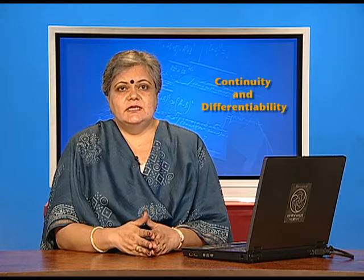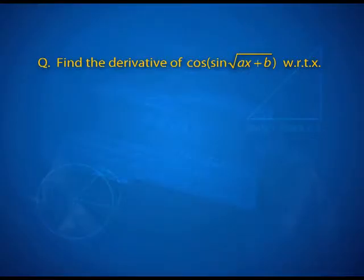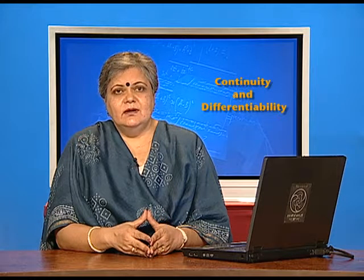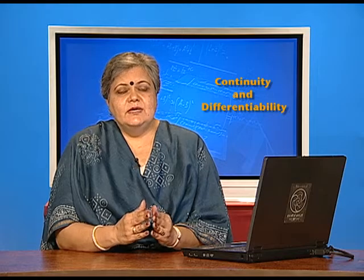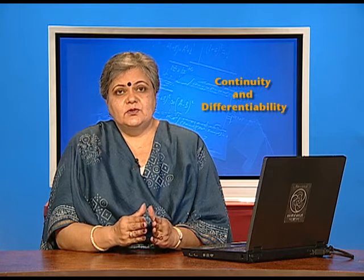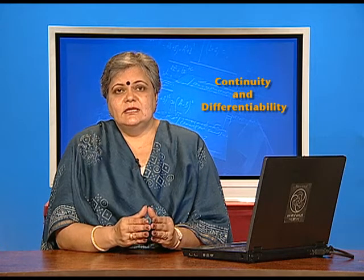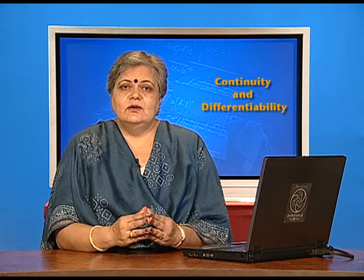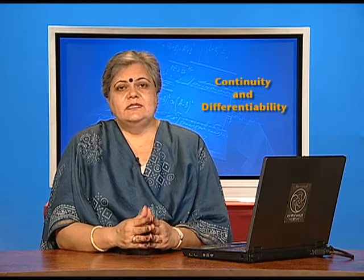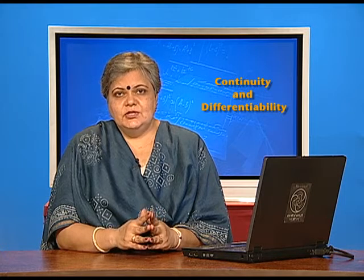Let us take a problem and see if we can cut short the assumption of u, v, and w. We have a question which says: find the derivative of cos(sin(√(ax + b))). Do you see how many layers are present here? How many functions are composed? First x changes to ax + b, then the square root function comes in, then the sine function, and then the cosine. So obviously it is very well a case for the chain rule.